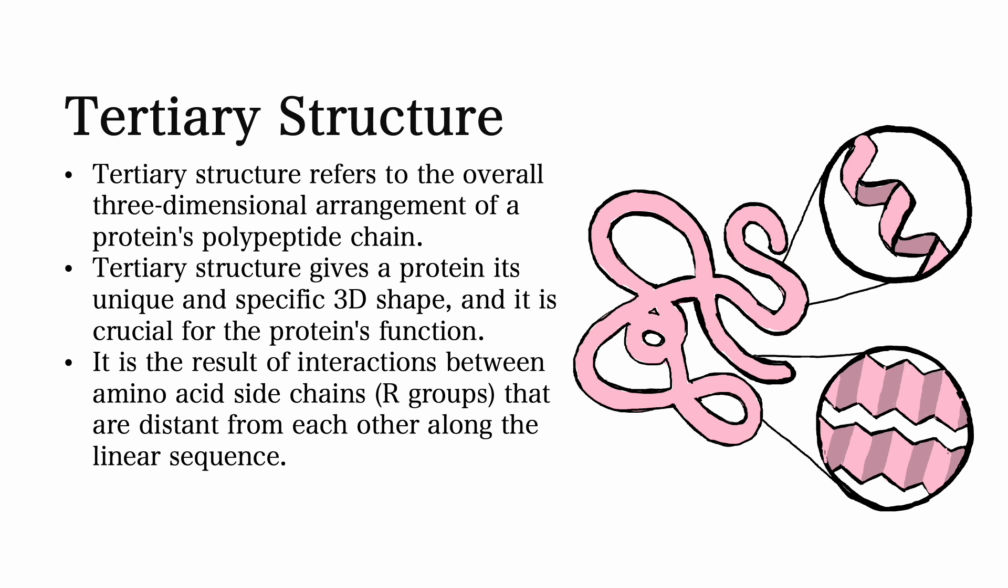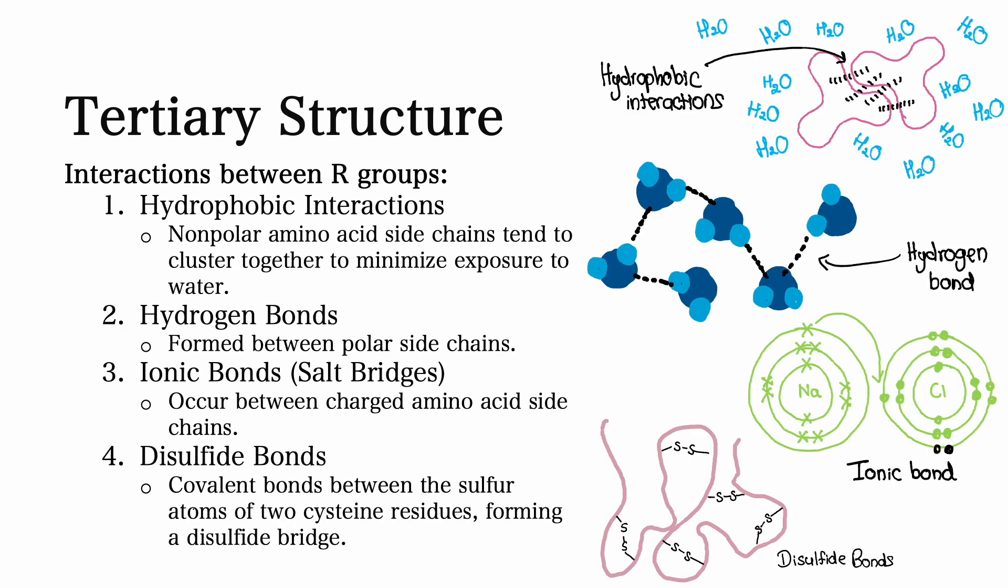Tertiary structure is the result of interactions between the side chains of amino acids. That means tertiary structures result due to interactions between the R groups. Interactions between R groups can be one of four types.